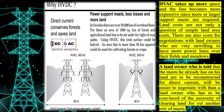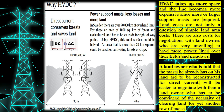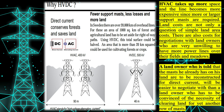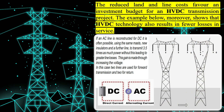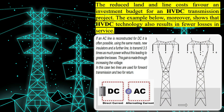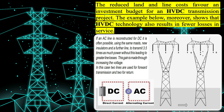Regarding electric and magnetic fields: static electric and magnetic fields occur in the vicinity of HVDC lines. The direct current sides of the converters also produce static electric and magnetic fields. Mainly time-varying alternating fields at the mains frequency of 50 Hz arise around three-phase alternating current connecting lines.